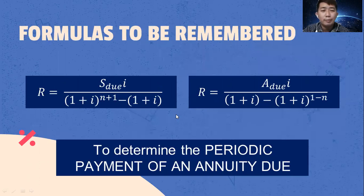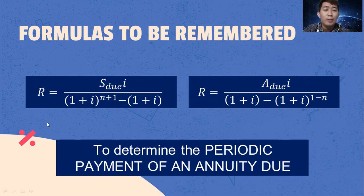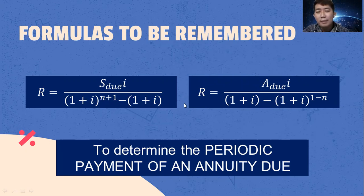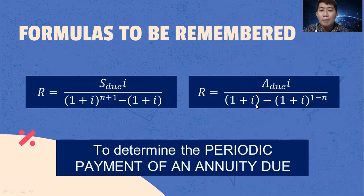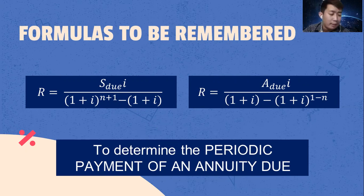What are the formulas to be used? We have two, and it depends on the given. If the given is future value, R is equal to the future value of an annuity due multiplied by i, divided by the quantity of (1 + i) raised to (n + 1) minus the quantity of (1 + i). If the present value of an annuity due is given, we use present value of annuity due multiplied by i, divided by the quantity of (1 + i) minus the quantity of (1 + i) raised to (1 - n).